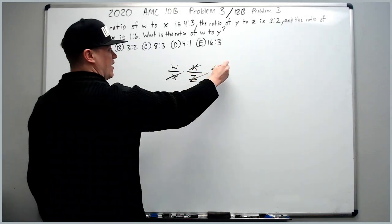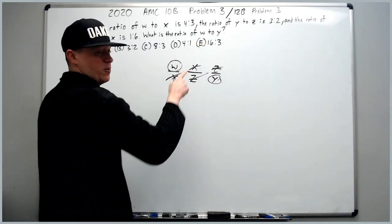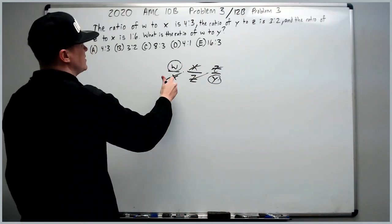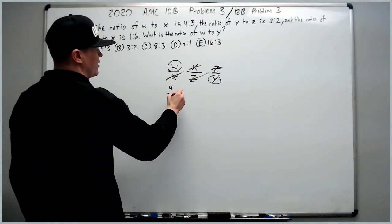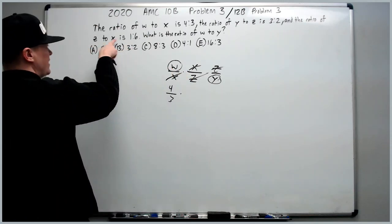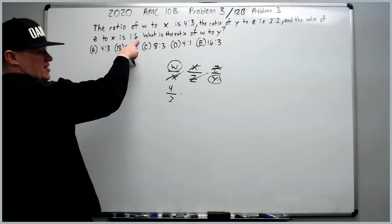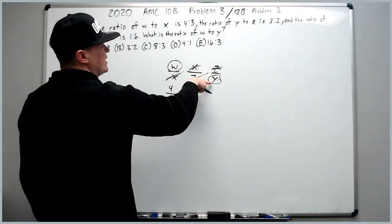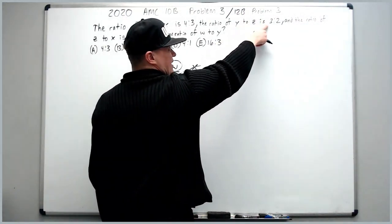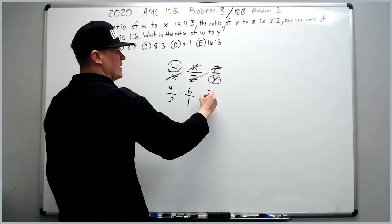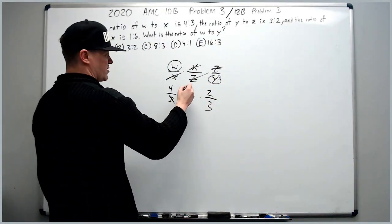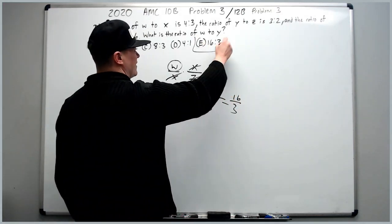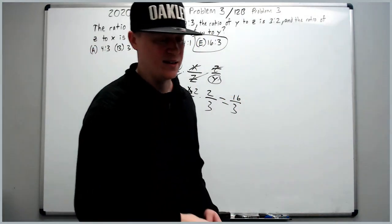Now, if I cancel everything out, what's left is w to y, which is exactly what we seek. So let's fill these in with what they are. W to x is 4 over 3 times x over z. Now, z to x is 1 to 6. We reverse it and get 6 over 1 times z over y. If y to z is 3 to 2, then z to y is 2 to 3. One of these 3s cancels with 6. 4 times 2 is 8 times 2 is 16 over 3. That's answer choice E.